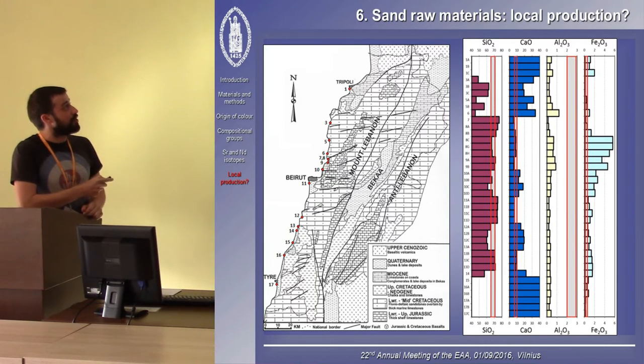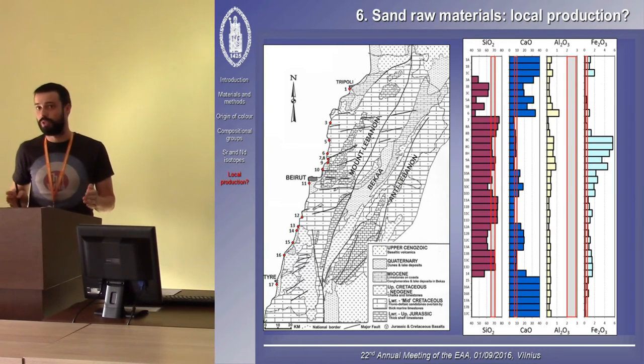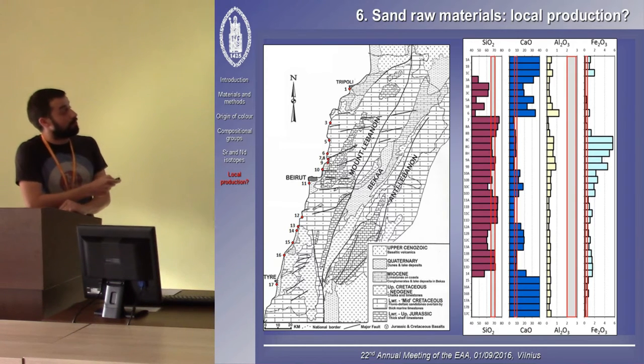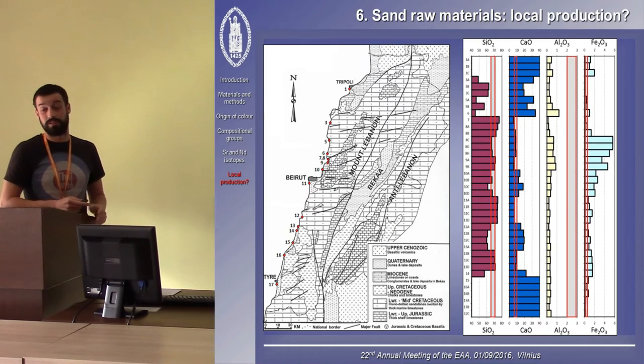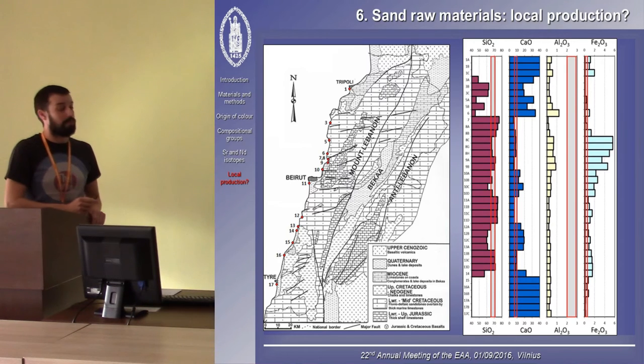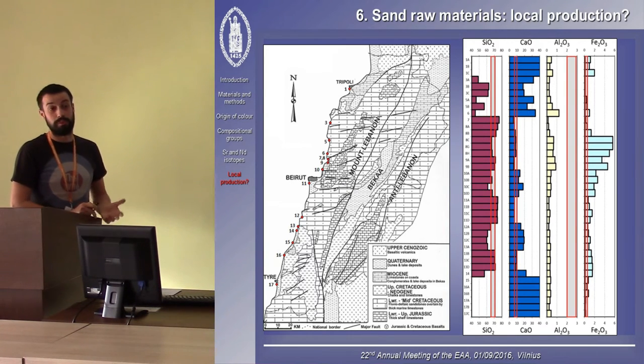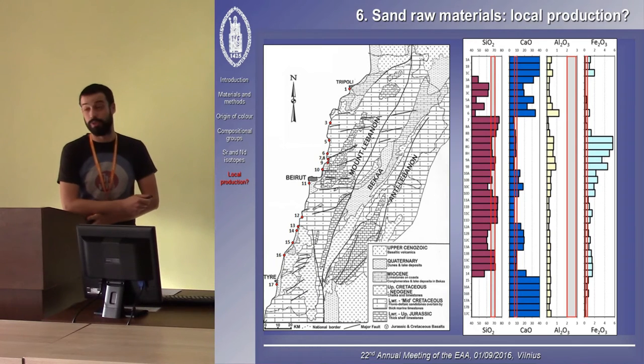The grey boxes here correspond to the compositional ranges we find in our major compositional group from Beirut, so the actual ranges we see in the glass. When we look at these data, we can at first glance see that... the data are represented here from north to south along the coastline. When we look at the data, we can see that in the northern part and the southern part, the hypothetical glasses would be very rich in calcium. This corresponds nicely with the geology. Both the northern and southern part of Lebanon are dominated by limestones. So, the beach sands there are almost exclusively composed of limestone fragments. They would not produce a good glass.